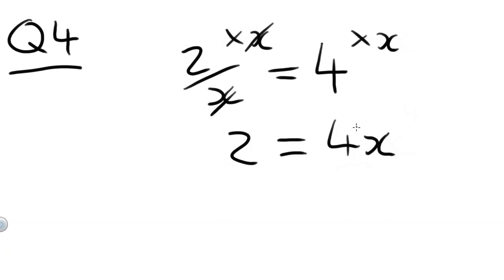On the right-hand side, we have 4X. To get rid of that 4, so 4 times X, we do the opposite. So divide by 4. Do that to both sides. 2 divided by 4. We can just write a fraction. 2 over 4 equals X.